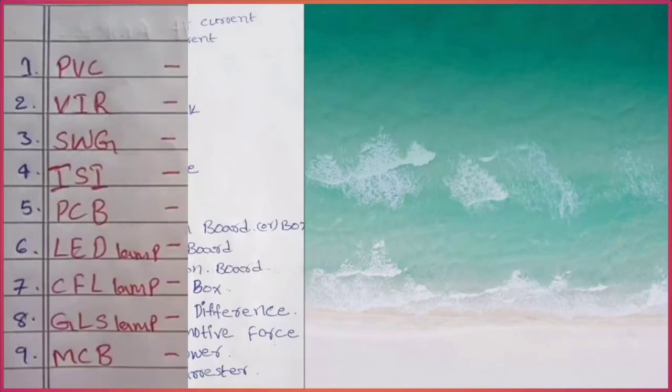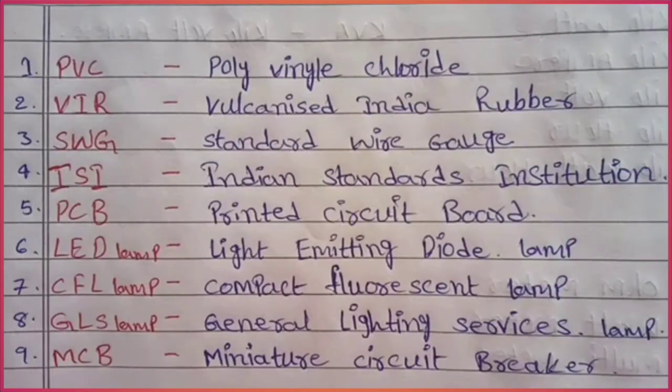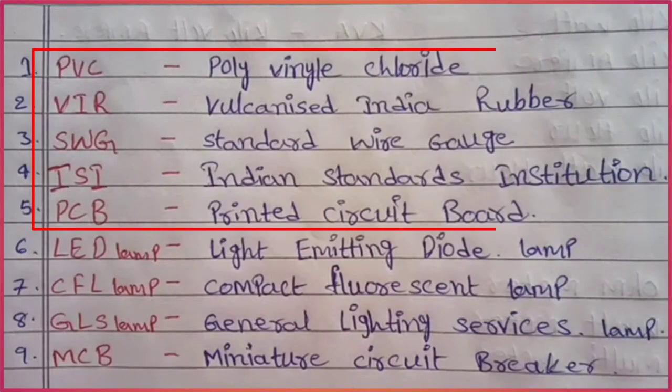PVC: polyvinyl chloride product. VIR: vulcanized India rubber. SWG: standard wire gauge. ISI: Indian Standard Institution.